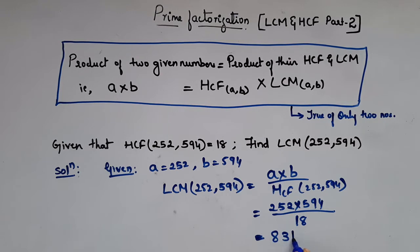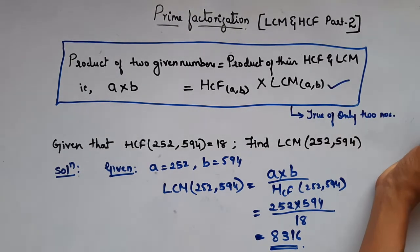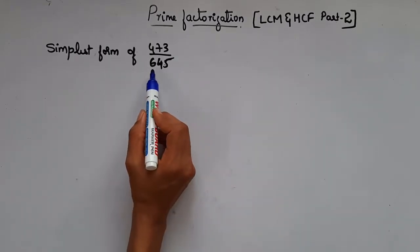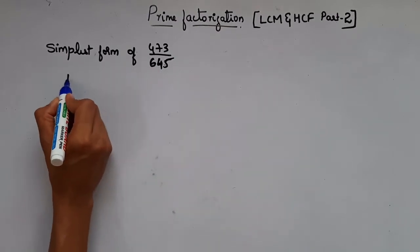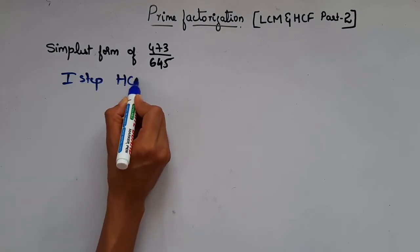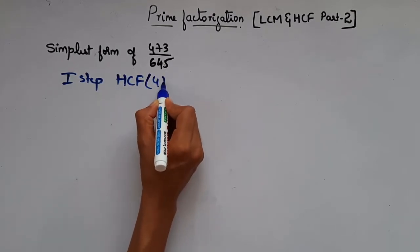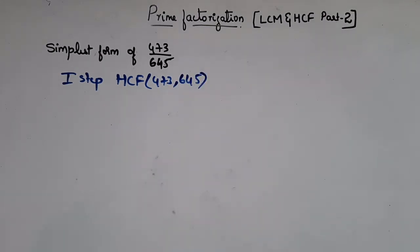So this is the LCM of these two numbers. Similarly, you can solve various problems using this formula. Now let's see how to write this in the simplest form or how to reduce it to lowest terms. For that, first step is to find HCF of these two numbers.